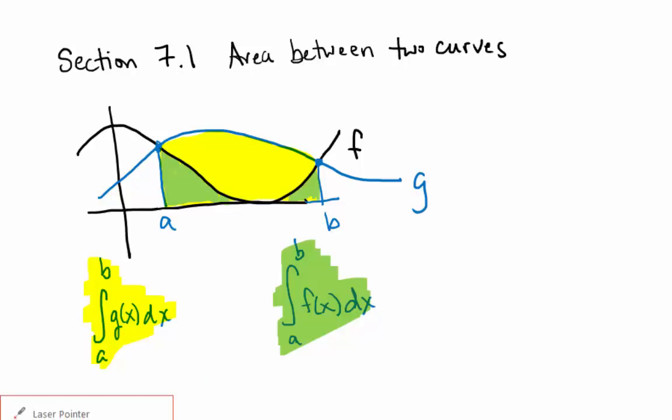So if we were to subtract the area in yellow, the area under g, minus the area in green, the area under f, we would get the area between f and g.